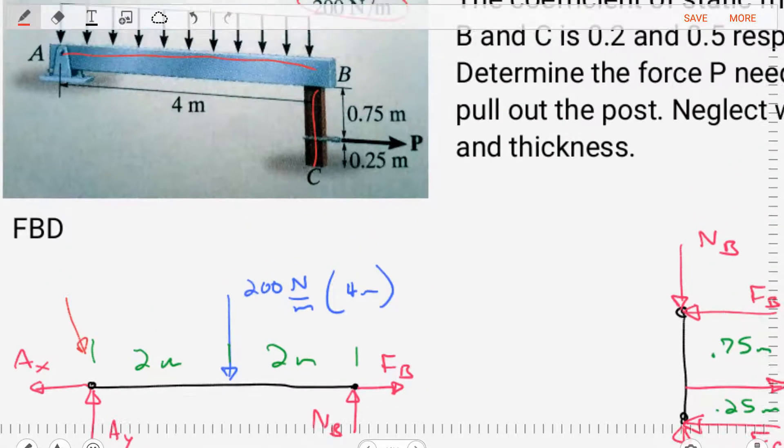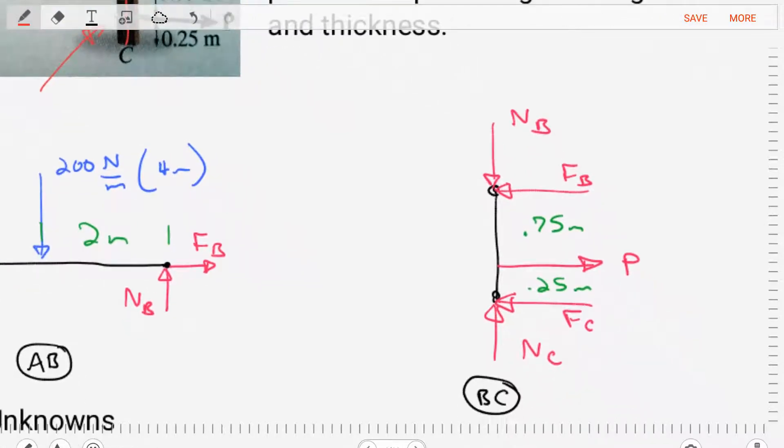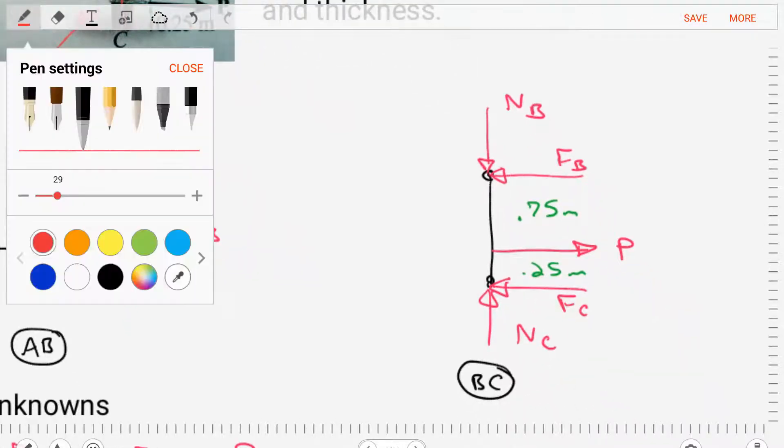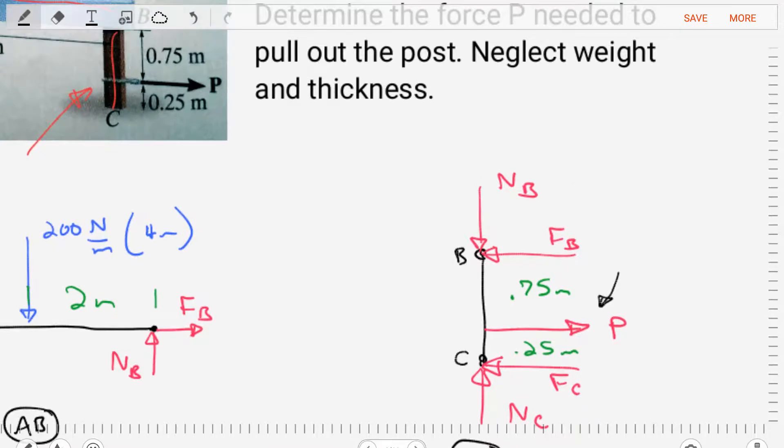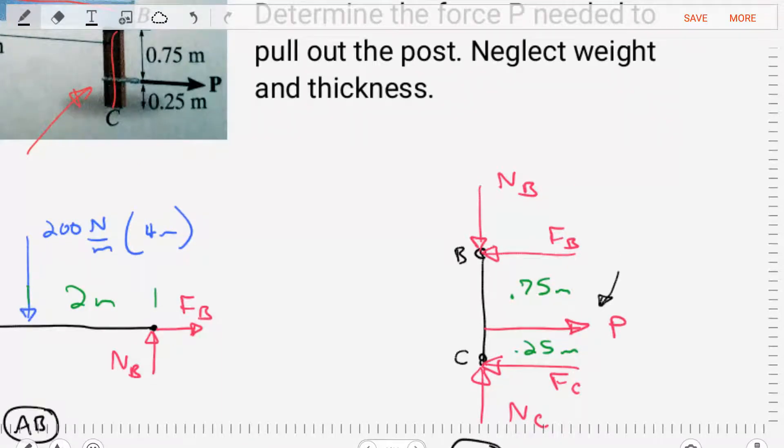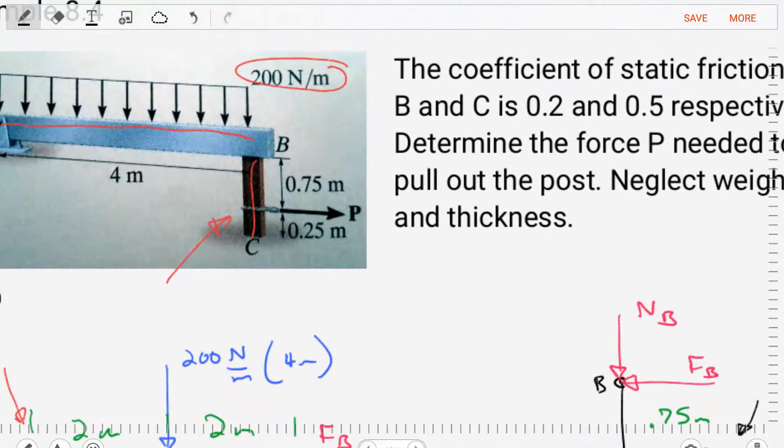Now let's create a free-body diagram of our post member BC. This diagram is going to seem a bit complicated, but we're going to figure out how to use it. First we draw the member BC. Then we'll put the force P and the dimensions of where it's located, which is 0.25 meters up and 0.75 meters down. Then we're going to replace the supports.